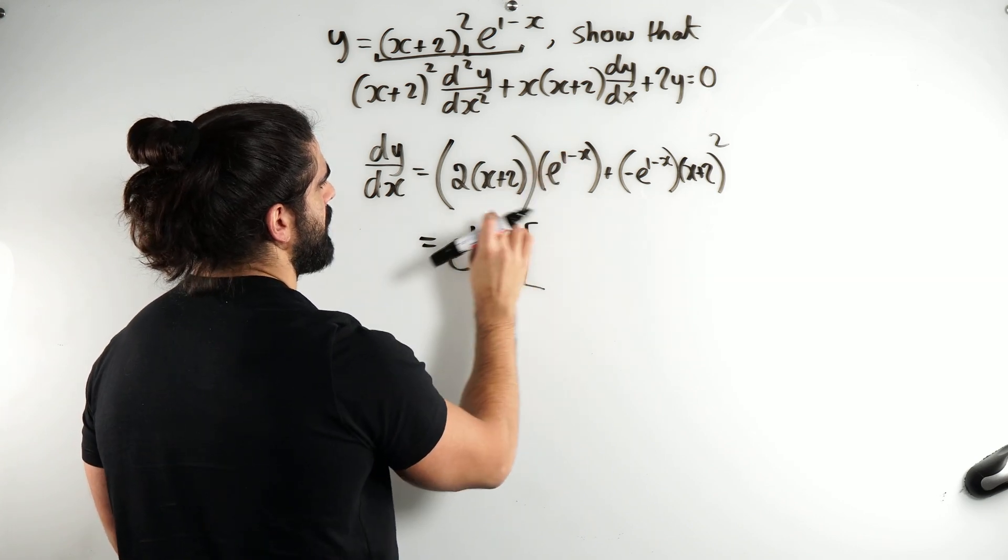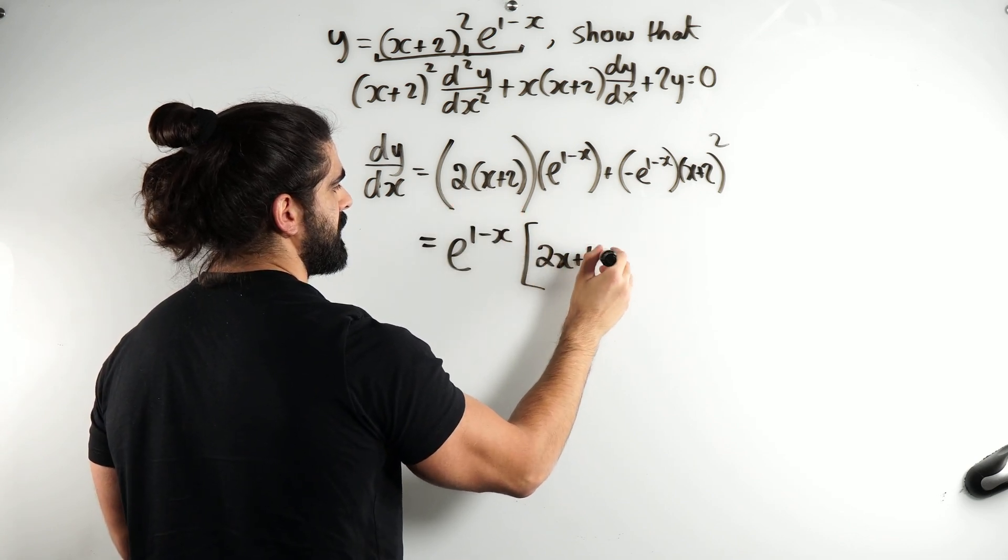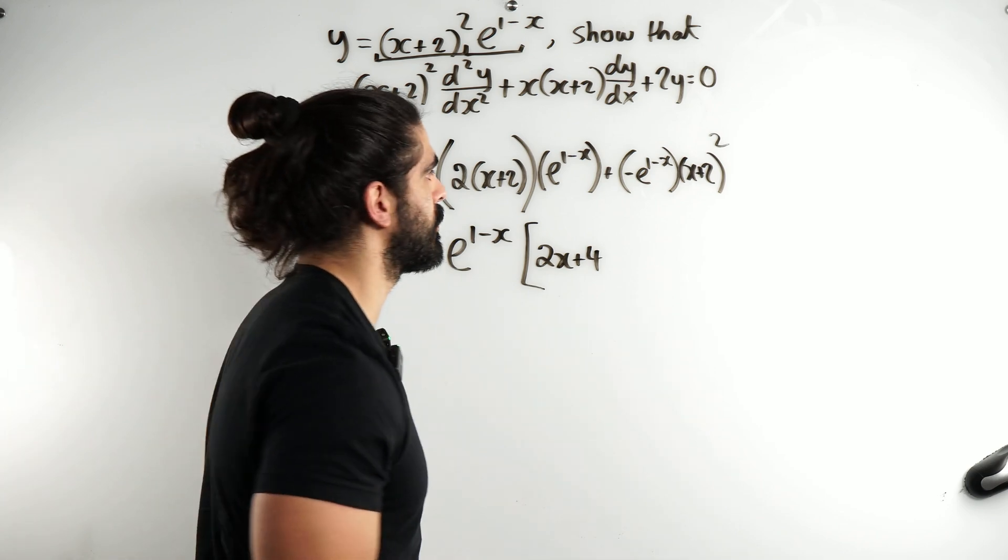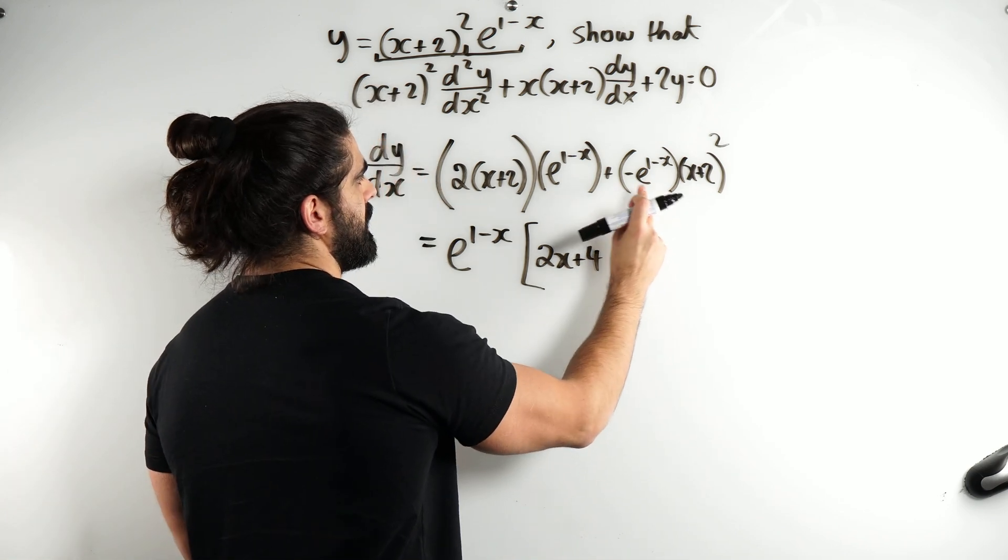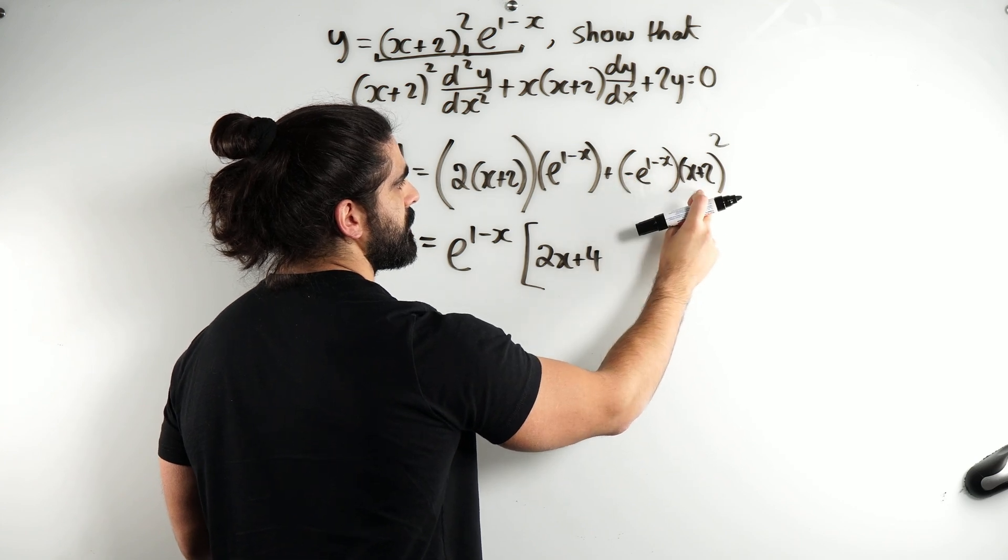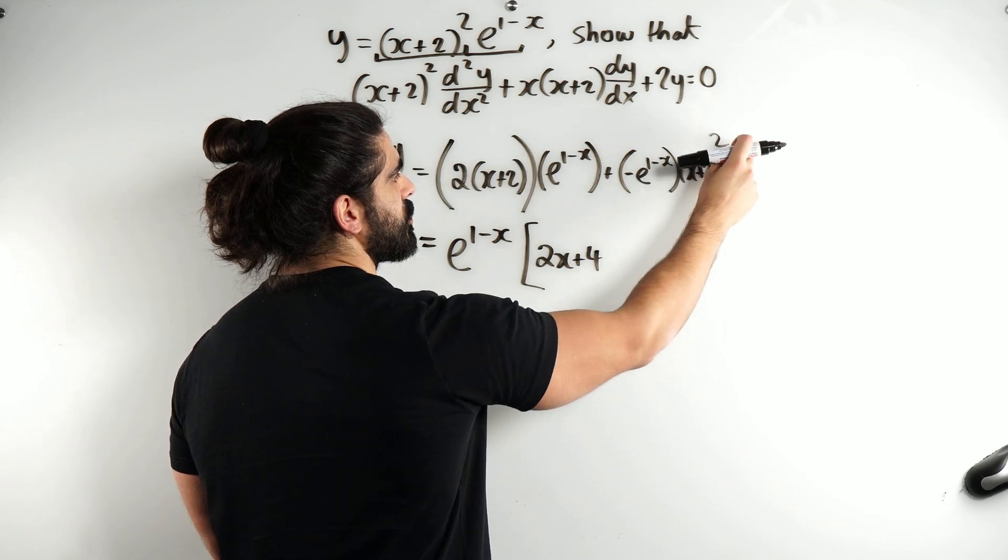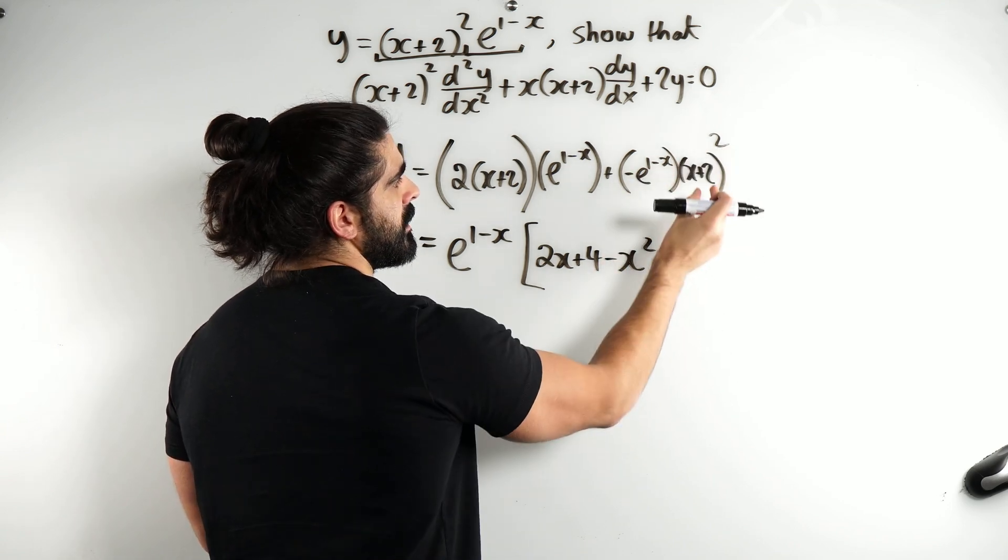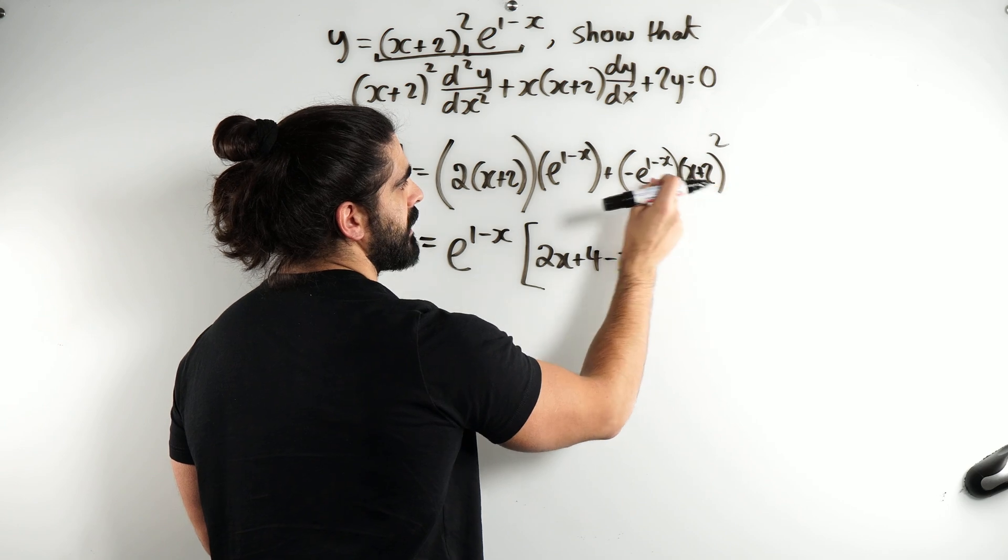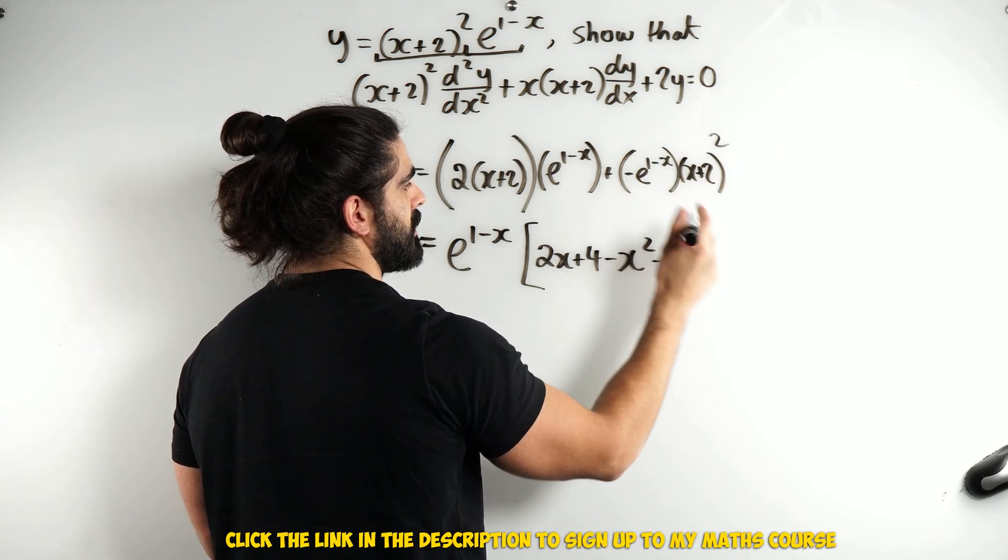Now, when you do that, what are you left with? This has come out, we have 2x plus 4. I'm going to expand it, because I'm preparing to do product rule again. Then, here, when you take out the e to the 1 minus x, you get the negative of this, and I'm going to expand it at the same time. You get x squared minus x squared, 2x doubled 4x minus 4x, 2 squared 4 minus 4.